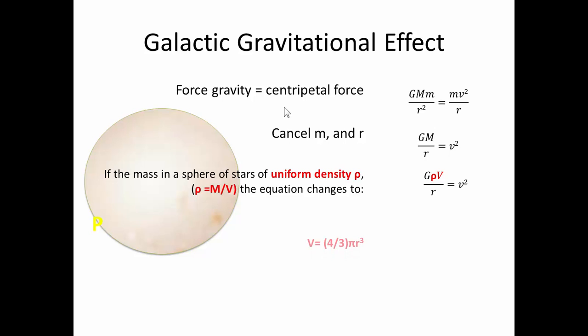But we know that the volume of a sphere is 4/3 πr³ so we substitute that in and then we can cancel one of the r's and we end up with by isolating for v that v is equal to the square root of 4πGρ/3 times r and this is the equation as it appears in the data booklet.